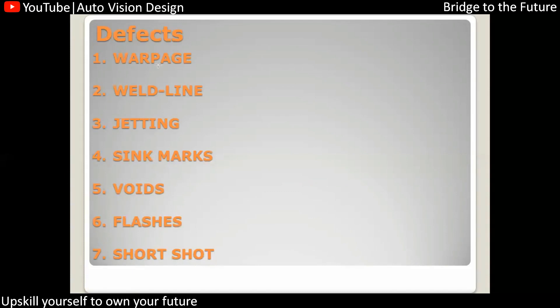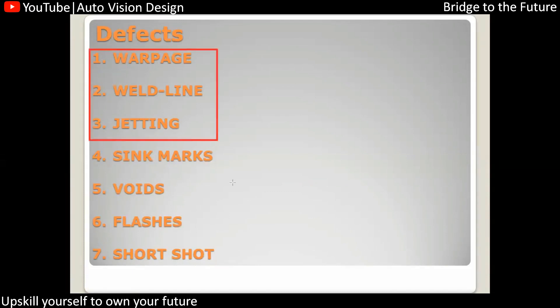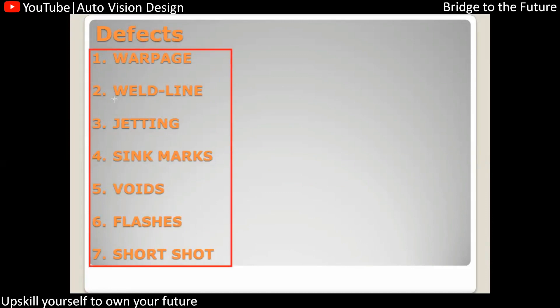These are the most commonly known defects, and there are many we will go through. The major defects in injection molding are: warpage, weld line, jetting, sink mark, voids, flash, and short shot. Let's check each one by one to understand exactly what these defects are.